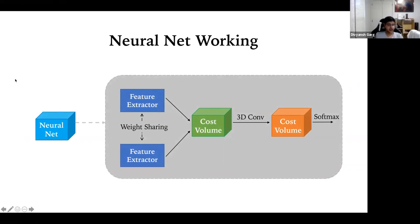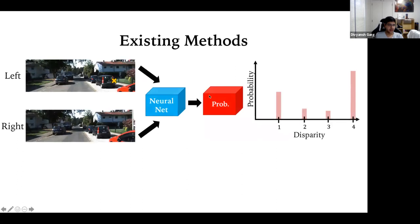The neural network works as follows. Feature extractors are used for both images — left and right — using a CNN with weight sharing. Given these features, we concatenate them along different disparities to create a cost volume. Then 3D convolutions and a softmax output a probability. This results in a 3D volume: a 2D input image with a 1D probability distribution for each pixel.